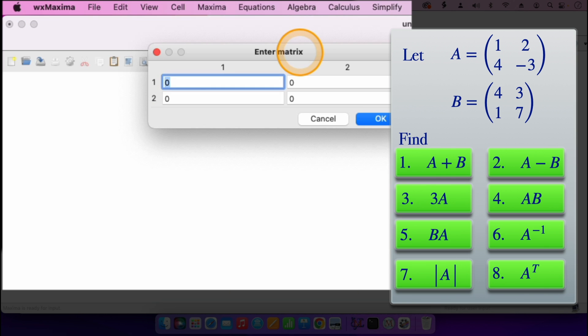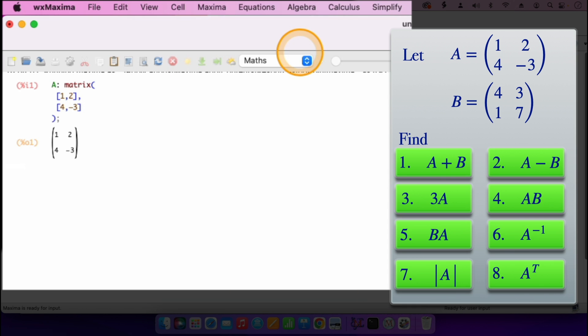Now I'll enter the entries of that matrix. The A has one, two, then four, then a minus three. I press enter, then we have that matrix there, and our A is one, two, four, minus three.